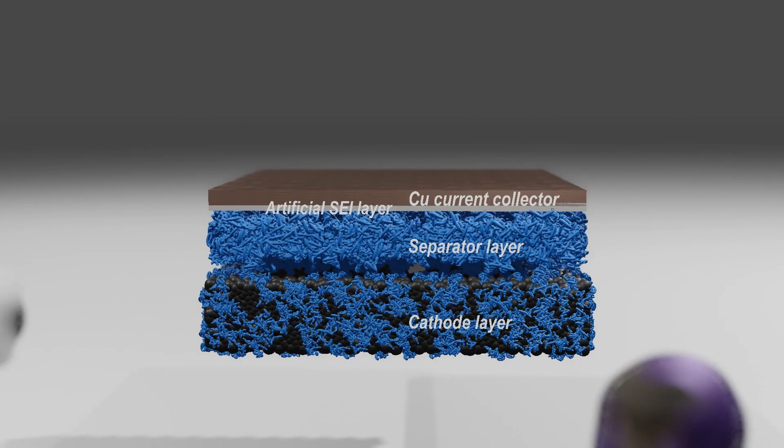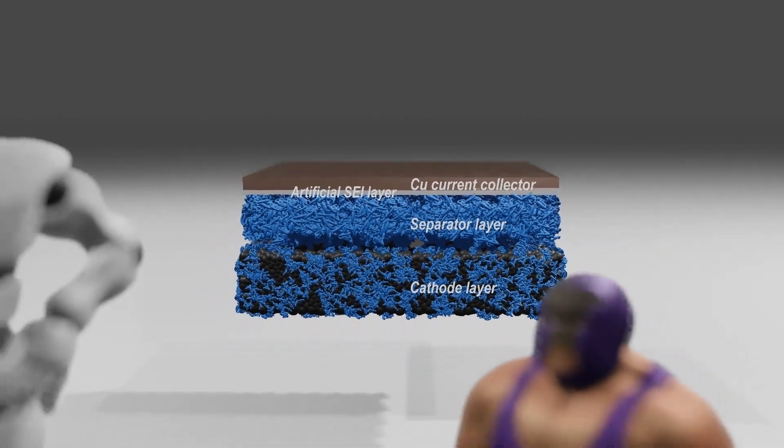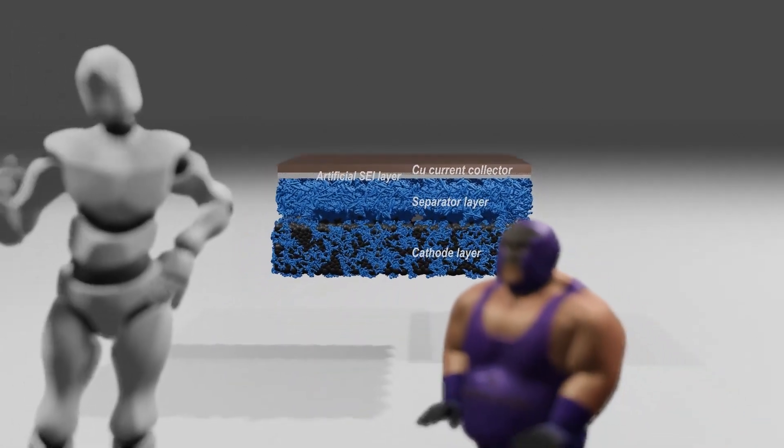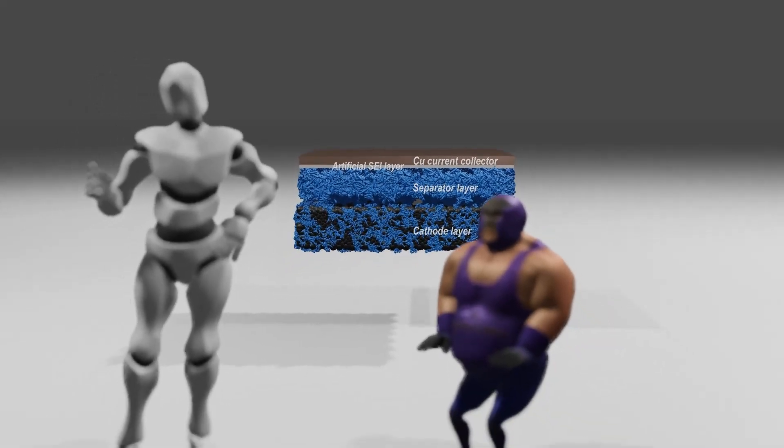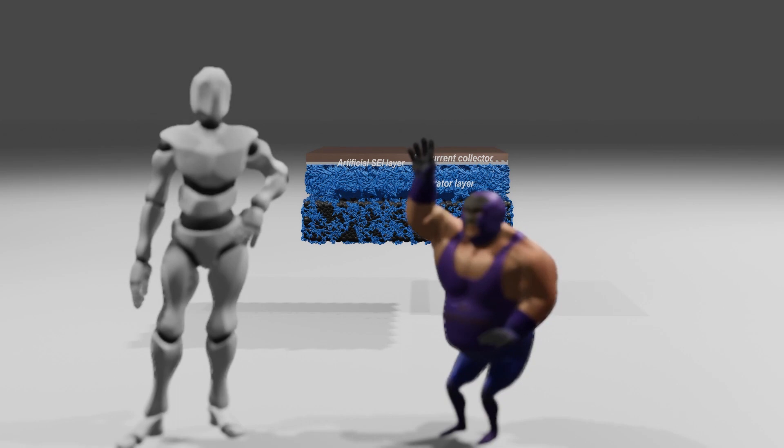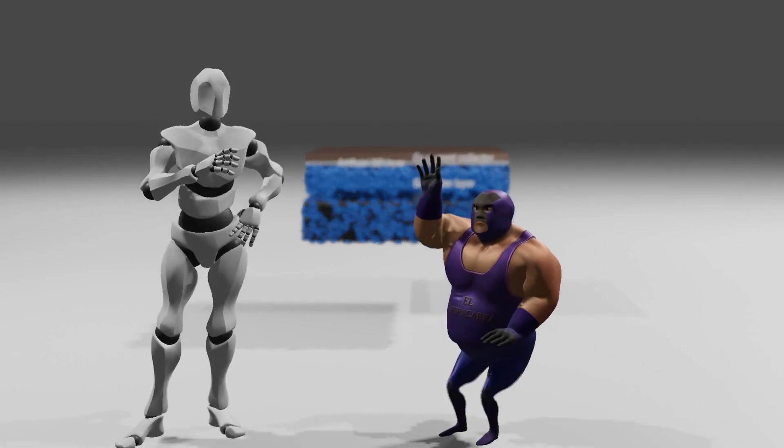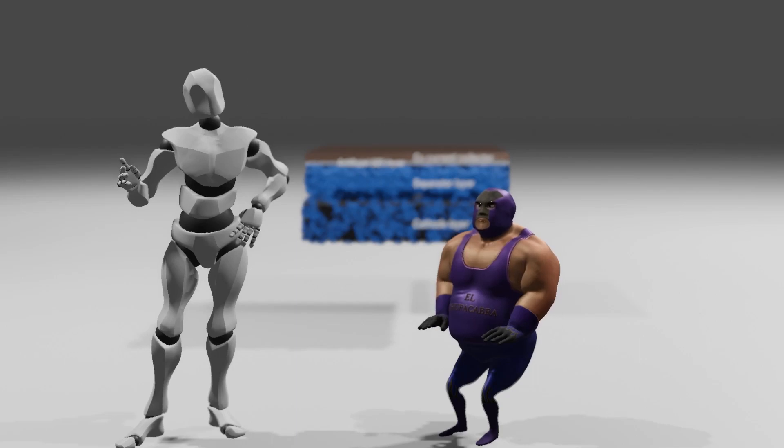But did you notice one odd thing? Polymer electrolytes generally have less than one one-thousandth of the lithium ion conductivity of liquid electrolytes. How did they overcome that? Is the battery raised to 60 degrees and driven like Blue Solution that first produced a semi-solid battery using a polymer electrolyte?